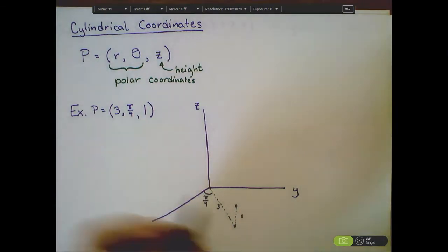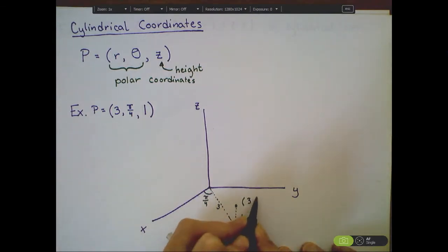3, 1. So this is the point 3, pi over 4, 1 in polar coordinates.